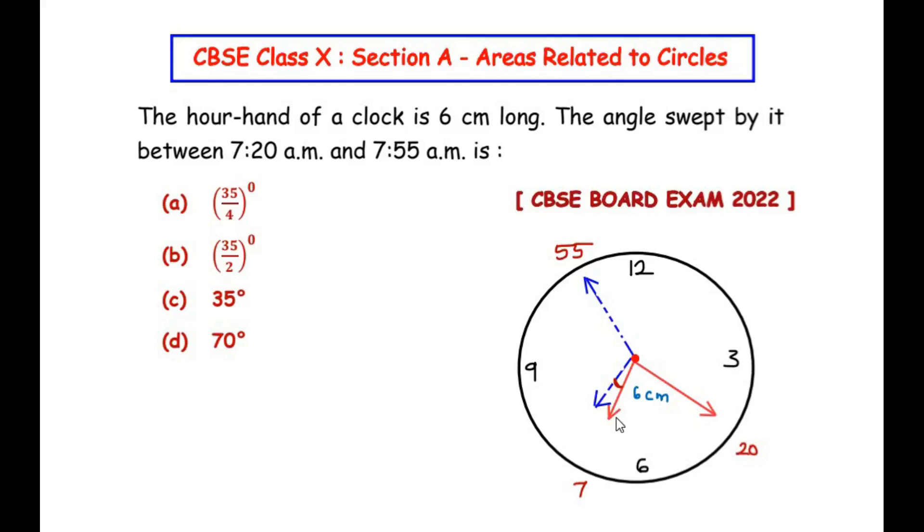According to the question, the clock moves from 7:20 AM to 7:55 AM, so the blue line shows 7:55 AM. In this question, we need to find out what is the angle made by this hour hand when it moves from 7:20 AM to 7:55 AM. So it is this small angle which we need to find.